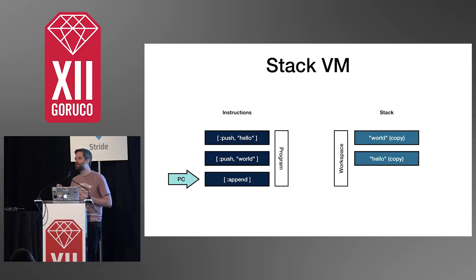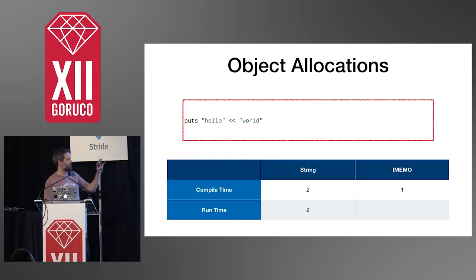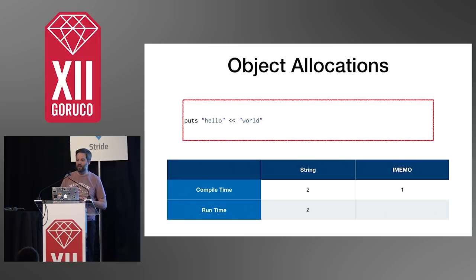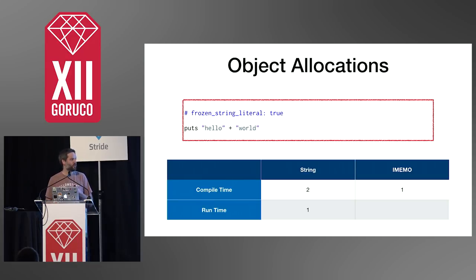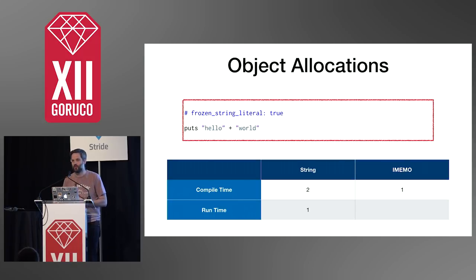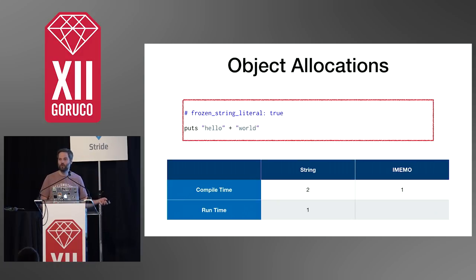This also explains object allocation in our code. When we compile some code, we end up with one iMemo object and two string objects. But when we execute the code, we end up with two more string objects because we had to dup them when we put them onto the stack. Side note: this is why the frozen string literal comment can help us out. If we specify 'frozen_string_literal', then the compiler knows these string literals cannot be mutated, and because they can't be mutated, we can optimize and say we're not going to dup it when we push onto the stack. So we'll have two strings, one iMemo, and only one string object allocated at runtime — our concatenated string.